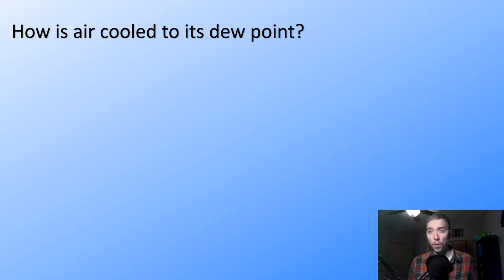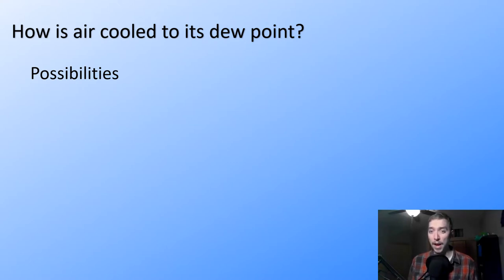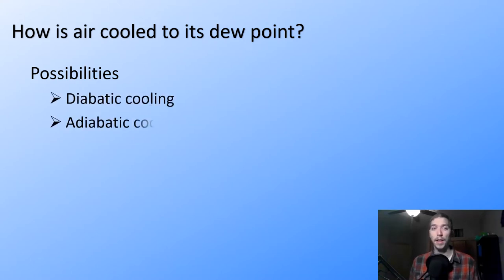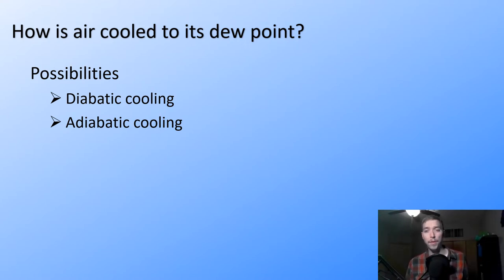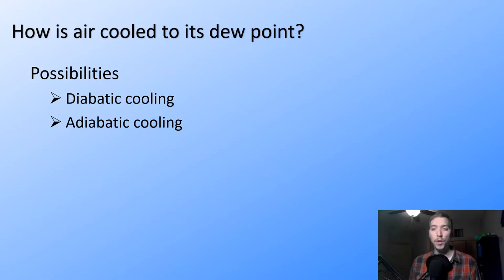I'm going to start off with some review. How is air cooled to its dew point? We talked about diabatic and adiabatic processes. Diabatic processes refer to any temperature change of air not related to adiabatic vertical displacements — vertical being the key word. Adiabatic processes deal with changing temperatures of a parcel of air due to the air rising or sinking adiabatically, and they assume no heat, mass, or momentum passes across the air parcel boundary.